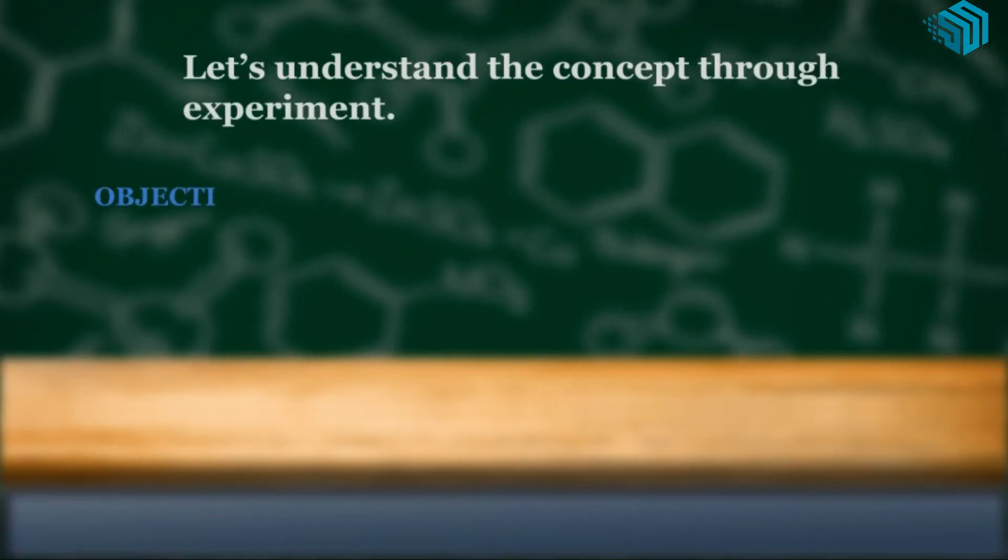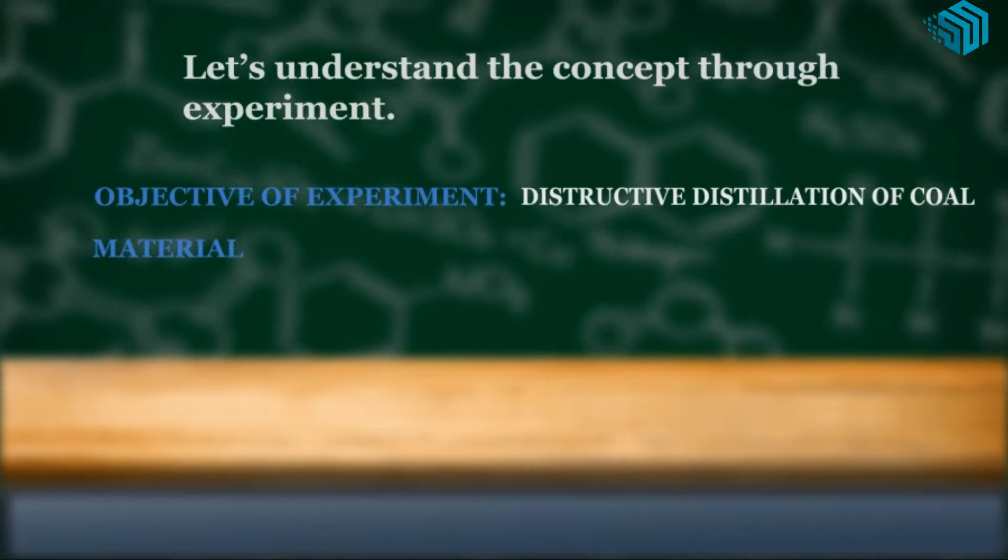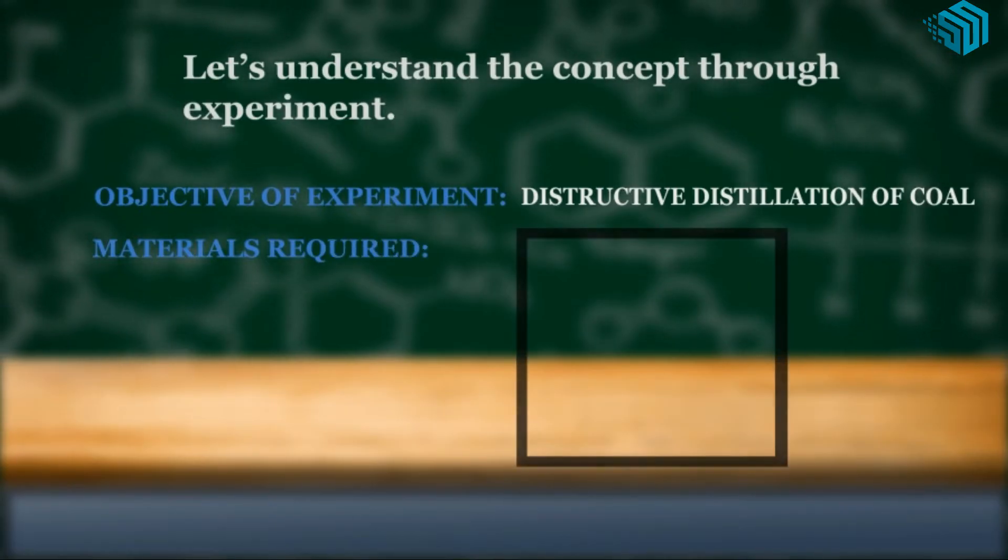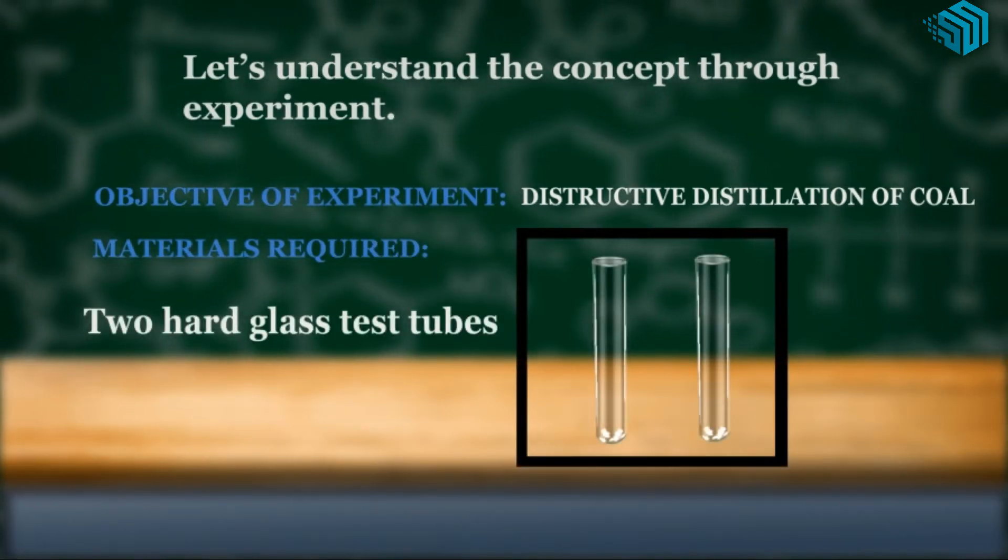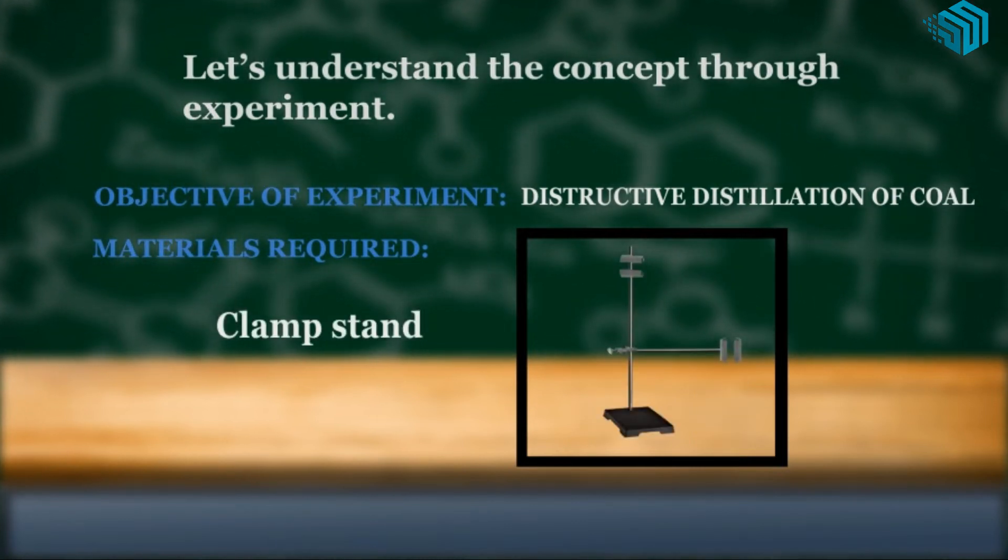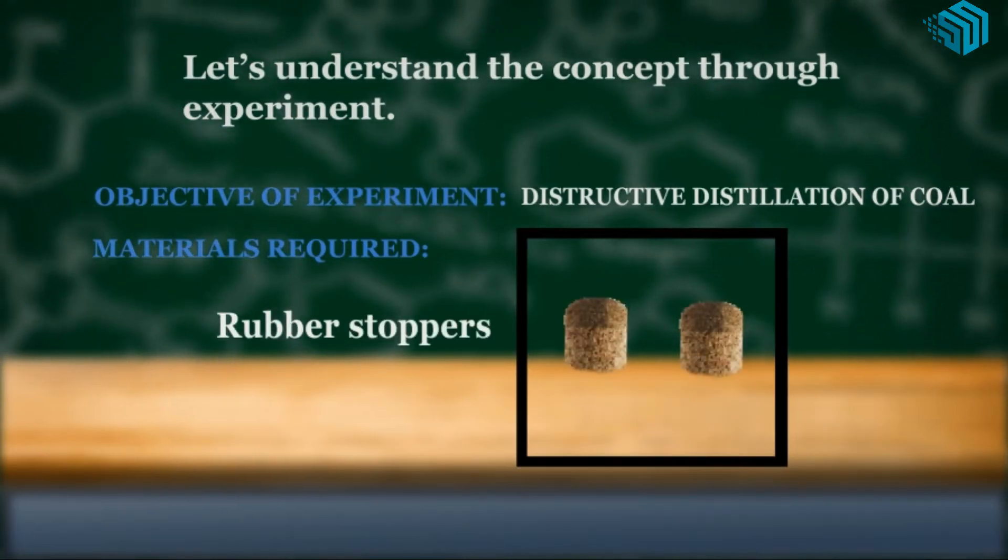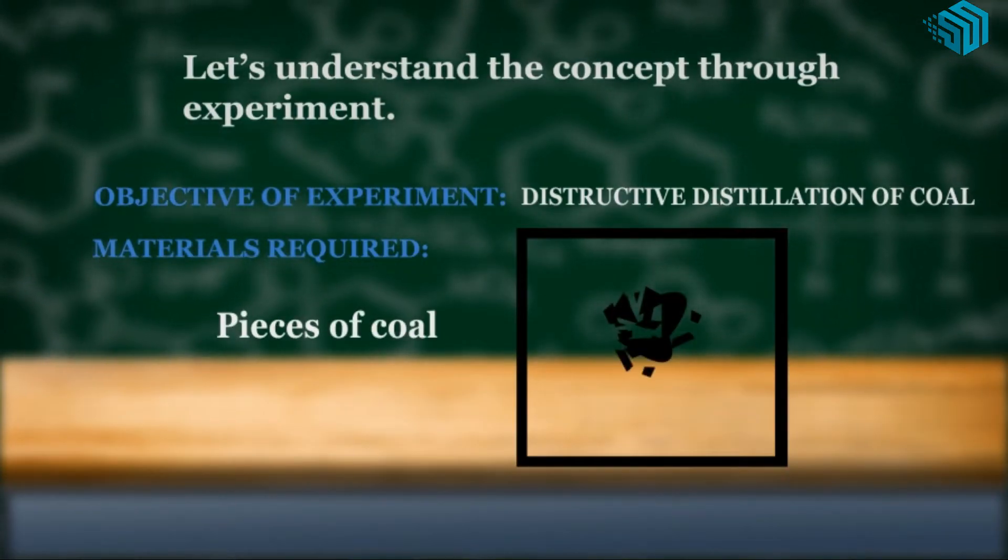Objective of the experiment is destructive distillation of coal. The materials required are two hard glass test tubes marked A and B, delivery tubes, clamp stand, burner, rubber stopper, pieces of coal and water.